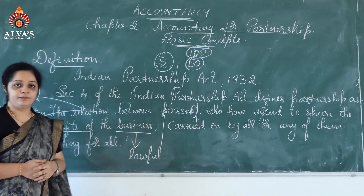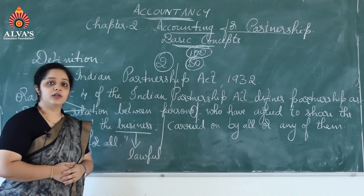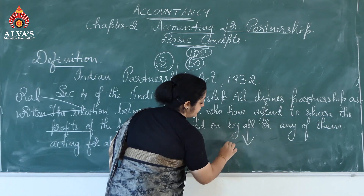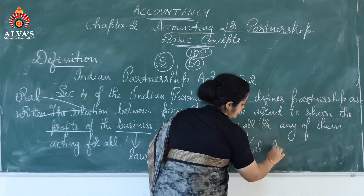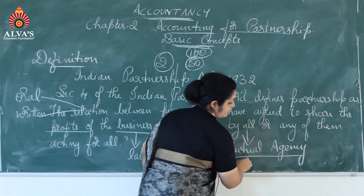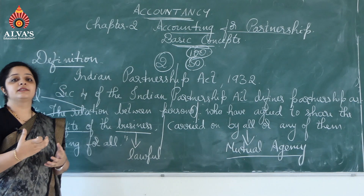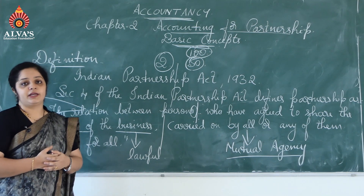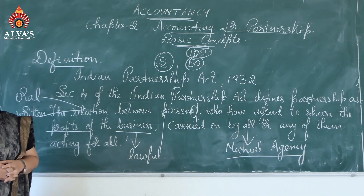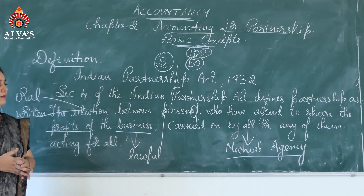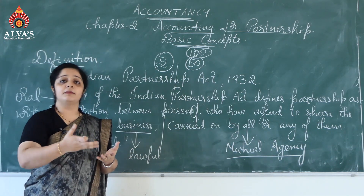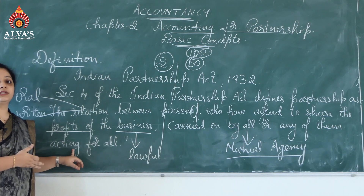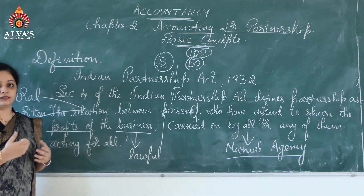Coming to the last section of the definition: 'business must be carried on by all or any of them acting for all.' This part is termed as mutual agency. This part talks about management or decision making. The Indian Partnership Act has given two options: either the management or decision making can be carried on by all the partners together, or any one person can do the management and take decisions on behalf of the other partners.